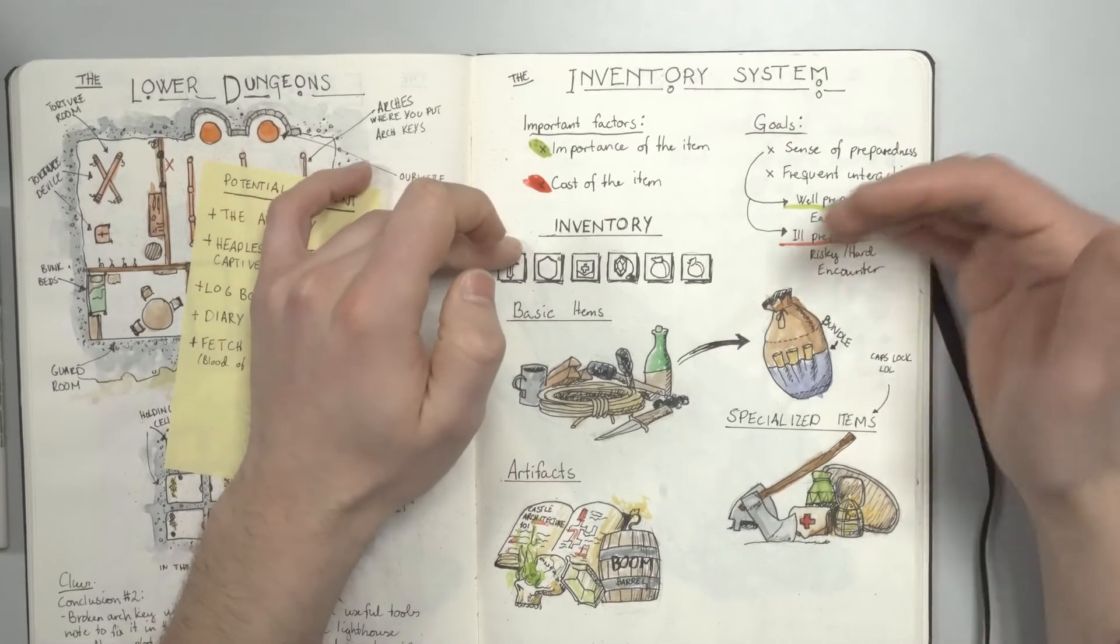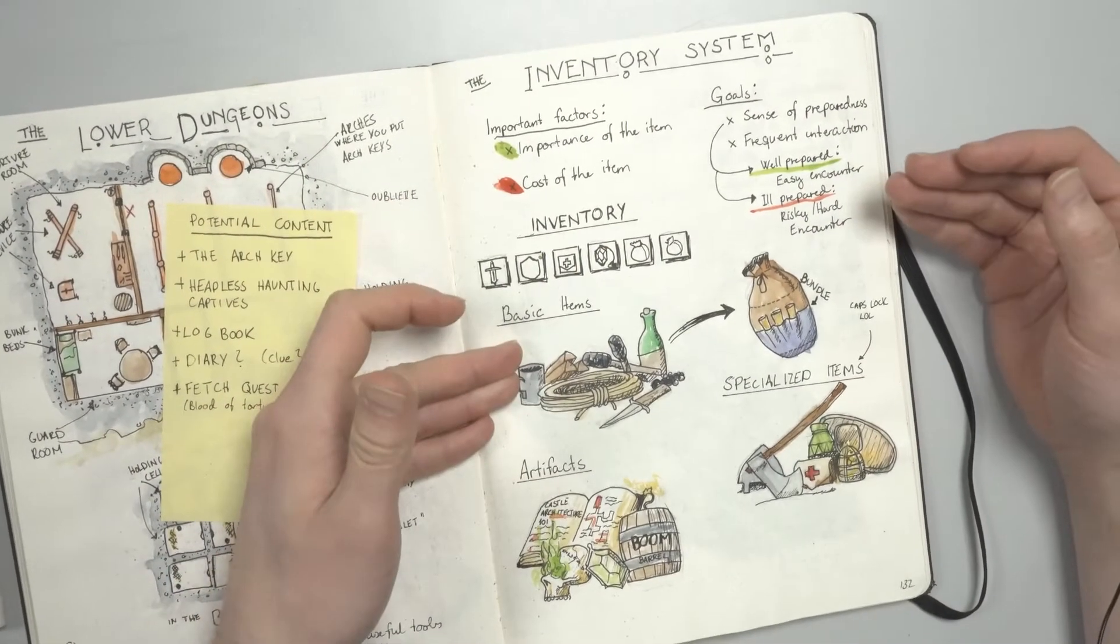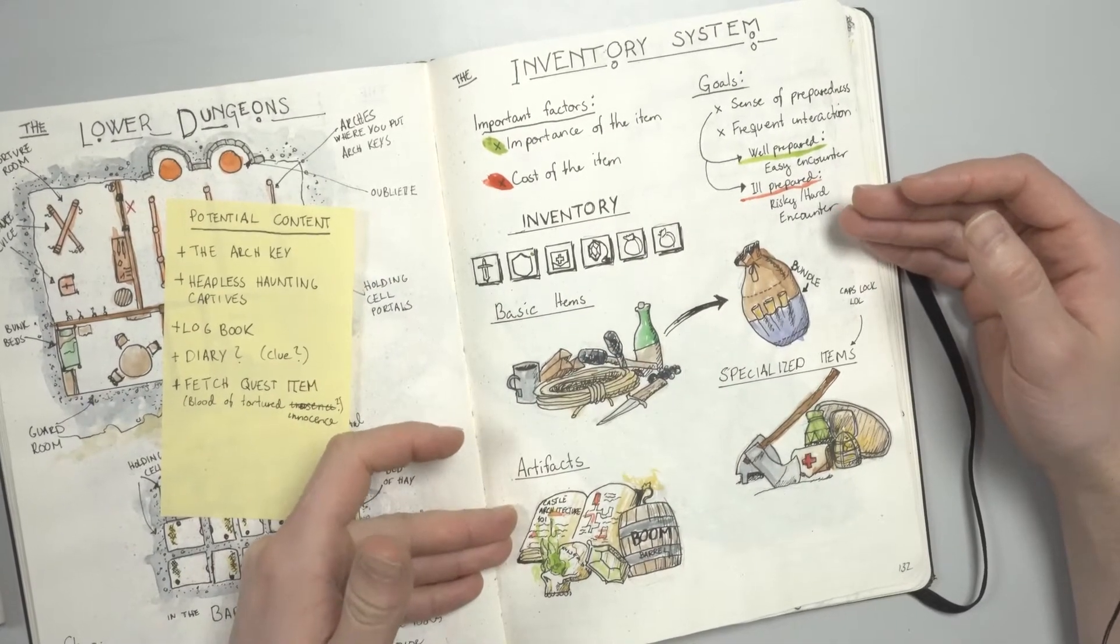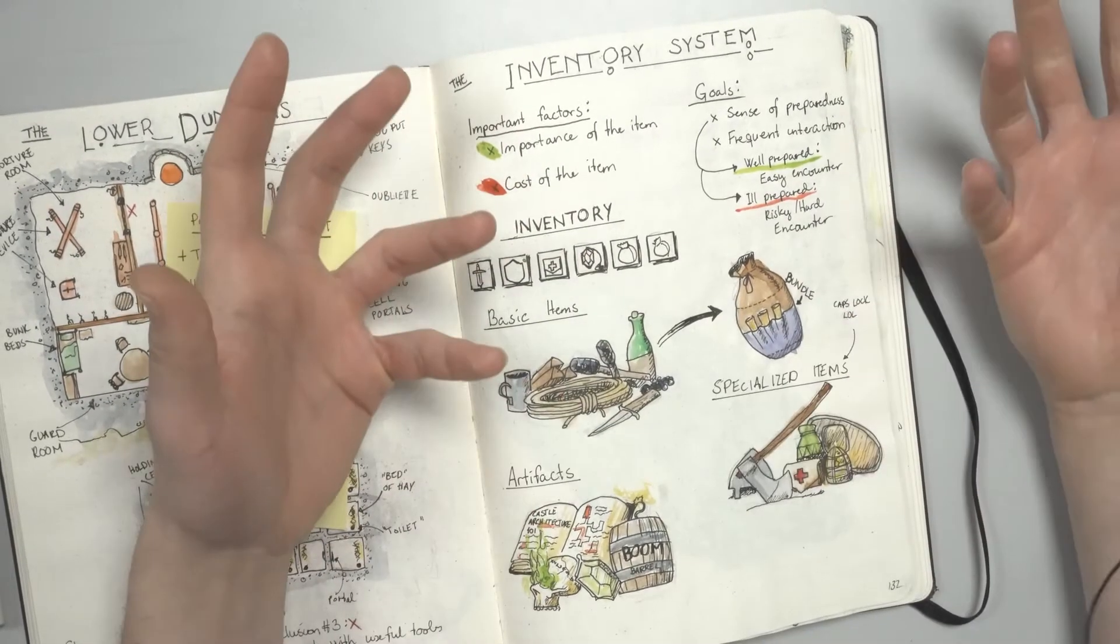These six slots can hold three types of items. Basic items, specialized items and artifacts. Basic items are stuff like torches, rope, a knife maybe.